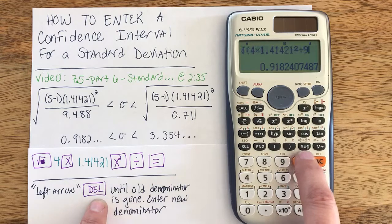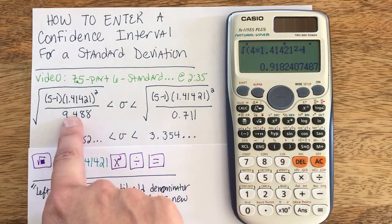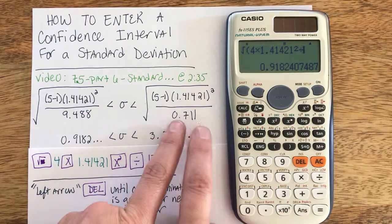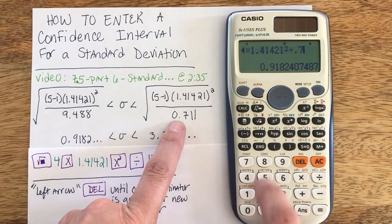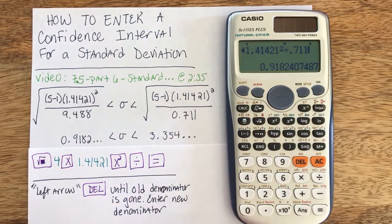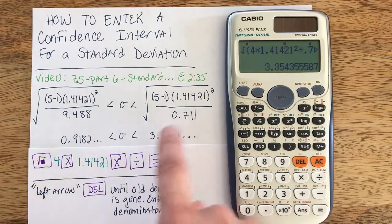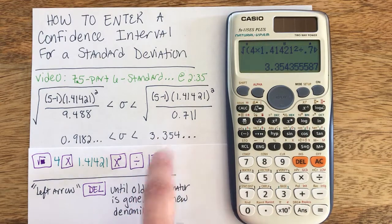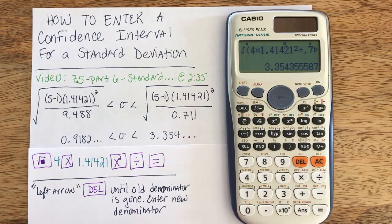And now I'm ready to type my new denominator of 0.711. I don't need the lead zero. I can hit equals and I get my upper bound of 3.35 etc.